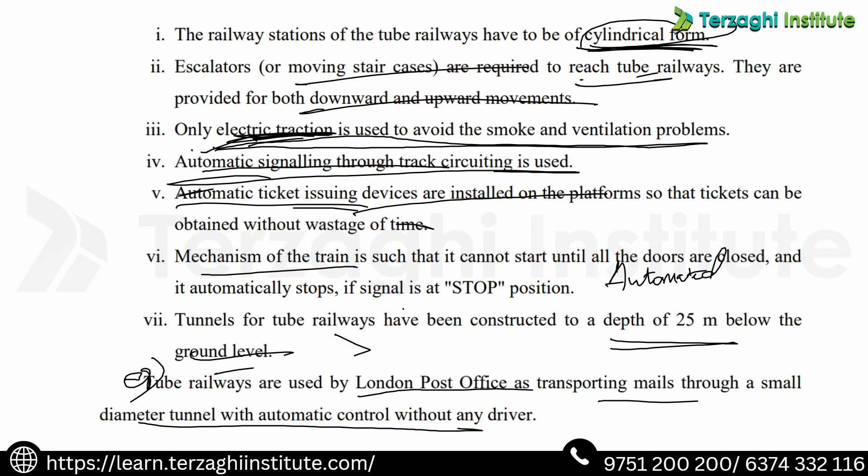The tube railways are also used by the London Post Office for transporting mails through small diameter tunnels. That covers the rapid transportation system topic. At diploma level, the depth of 25 meters is a key figure to remember. Just read through these points carefully.